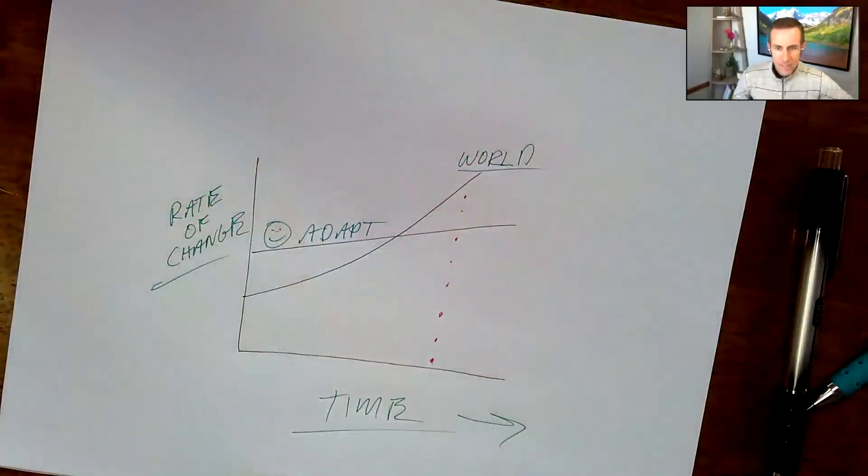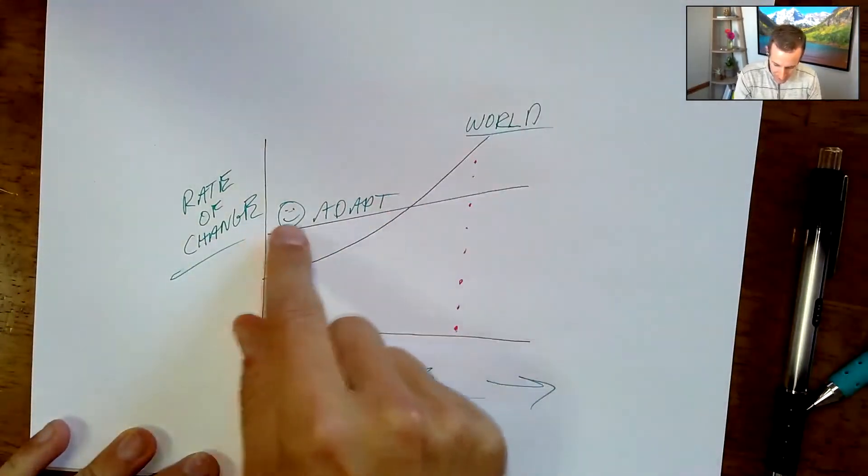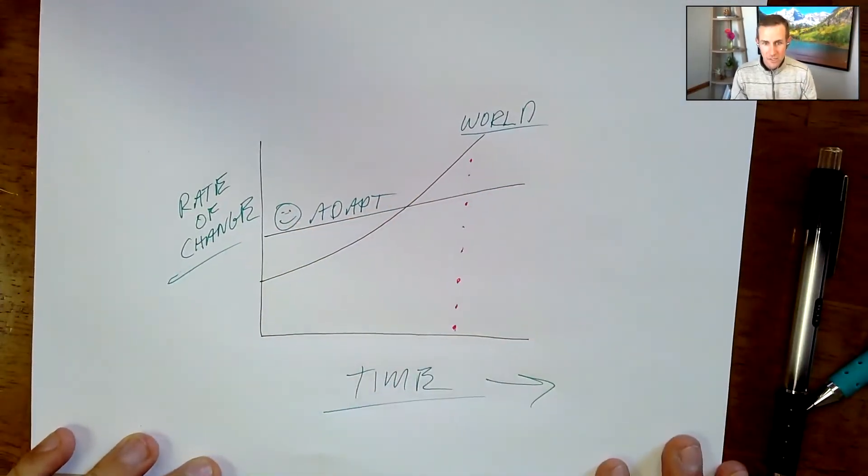On the last video, we shared with you this image right here. We talked about this idea that the world around us is changing faster than our ability as human beings to adapt to that change.